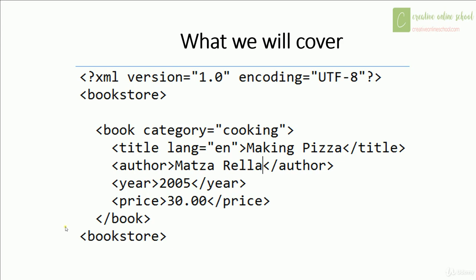Within the book section there are things like title, author, and year. Those tags wrap the actual information so that on the recipient's end they know exactly what they're looking at. If they want to know the title of the book in the cooking category, they can go to the category cooking, look for the title, find out that it's 'Making Pizza', and they know exactly what to look at because each step has its own tag.